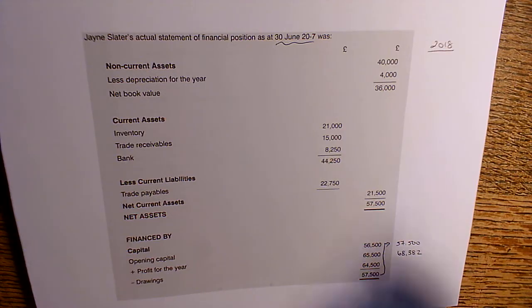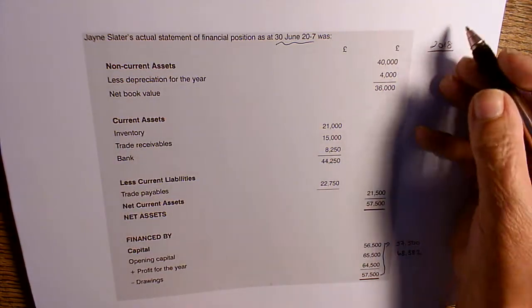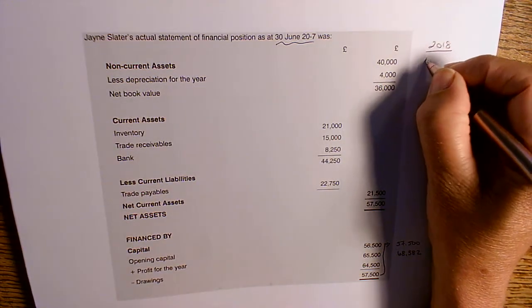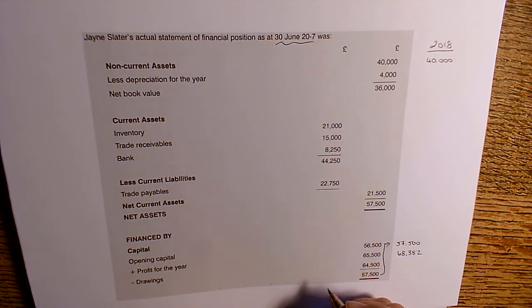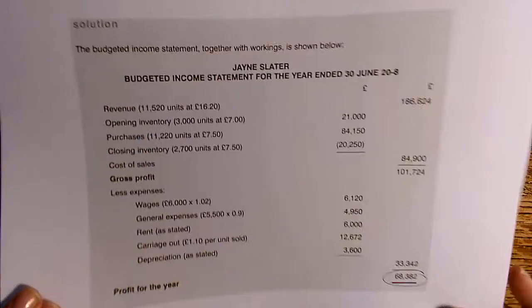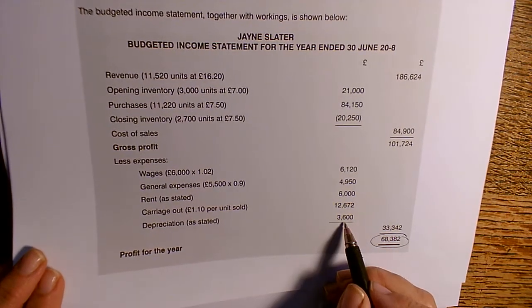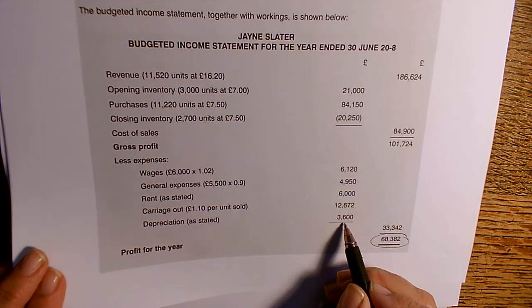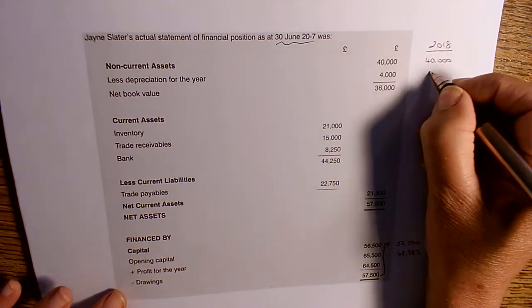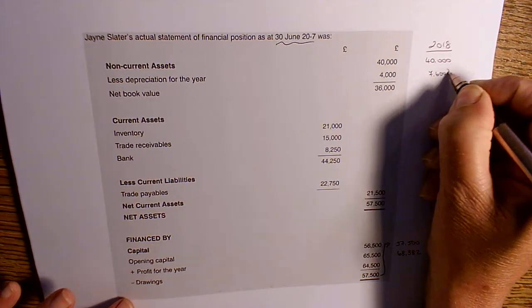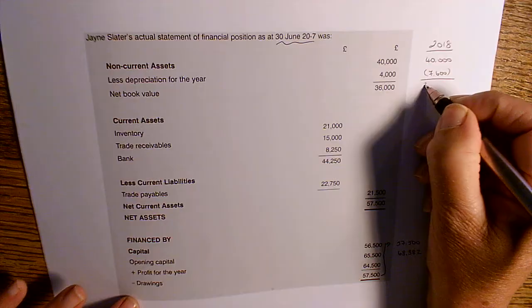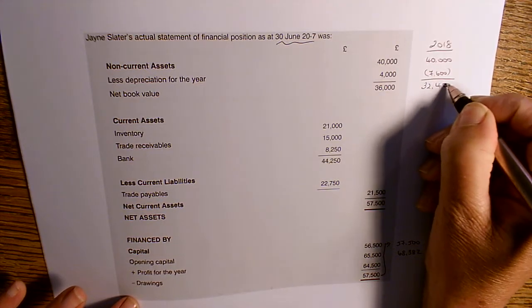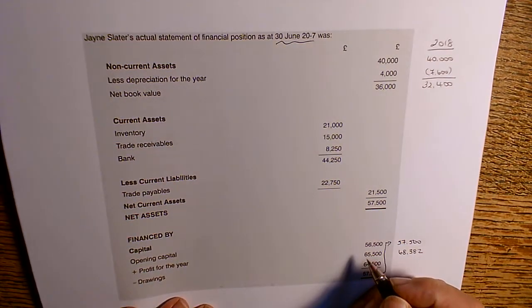Going through the rest of the year, starting with our non-current assets — we weren't told that Jane had bought any new non-current assets during the year. But we do know from the income statement that she's provided another £3,600 worth of depreciation. So if we add that to the £4,000 that was already there, the net book value is now £32,400.